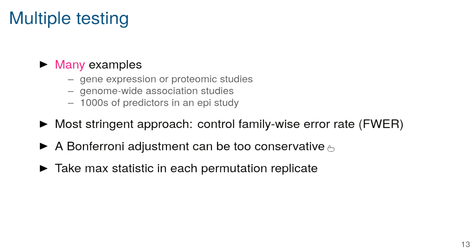It's hard to figure out theoretically how to account for correlation among tests, but the permutation results allow you to do it without any real thought. For each permutation replicate, take the maximum test statistic across the genome, focus on that max, and compare your observed maximum to the distribution of the maximum across permutations. This ensures the family-wise error rate is controlled — and it does so right on target, giving exactly five percent error rate under the global null rather than far below five percent as Bonferroni might give.